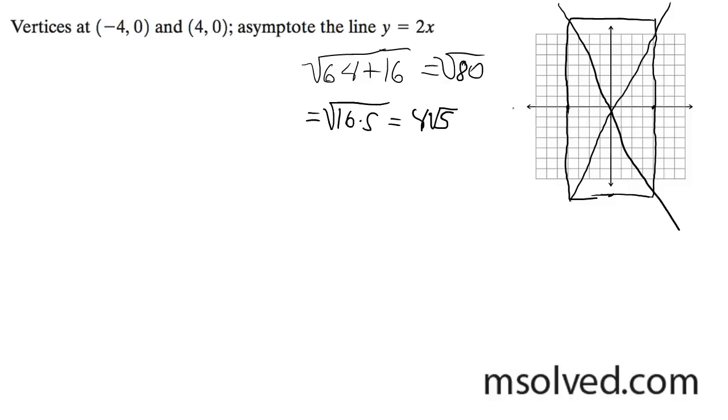So 4 root 5 is equal to 8.94, which is way out here. 9, which is right out here somewhere. So we finally get something like this.